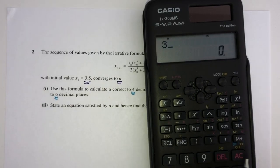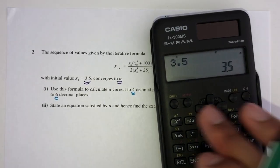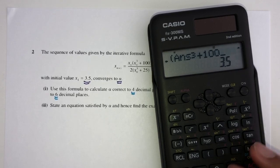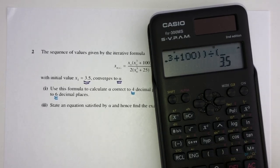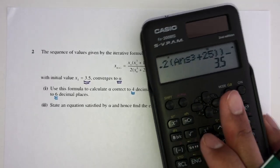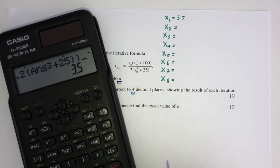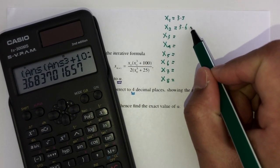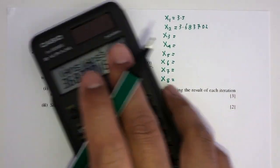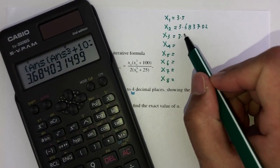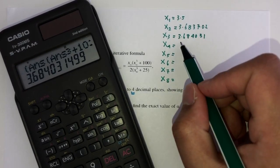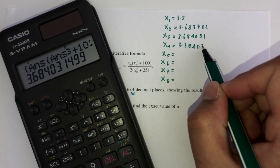The first value is 3.5. Then we plug into the formula — answer times answer cubed plus 100, divided by 2 times answer cubed plus 25 — and press equals each time. That gives 3.683702. Keep going: that gives 3.684031. Continuing the iteration, we get 3.684031 again.